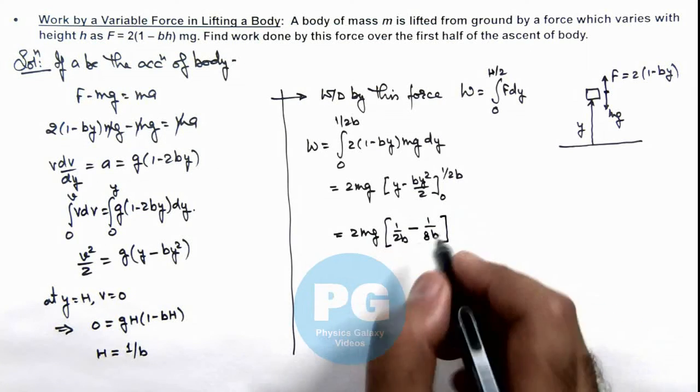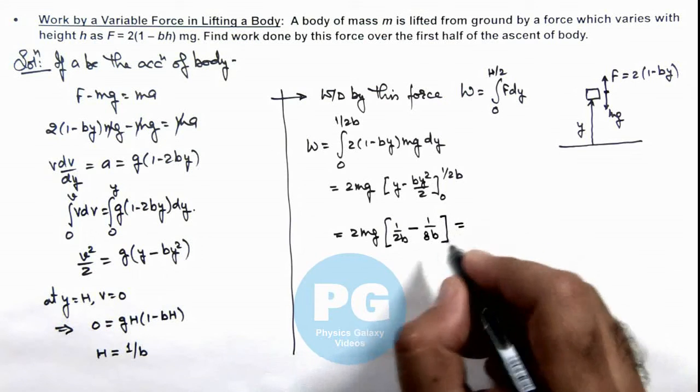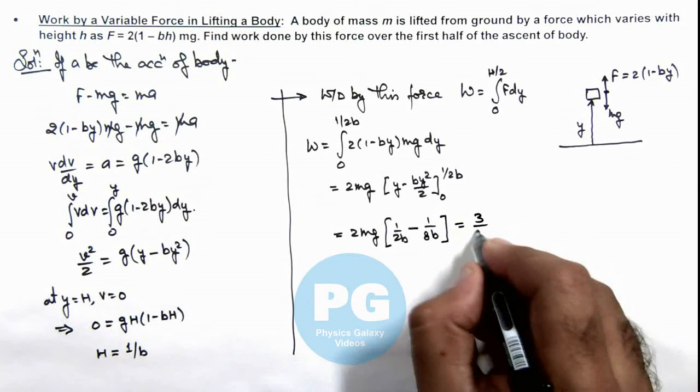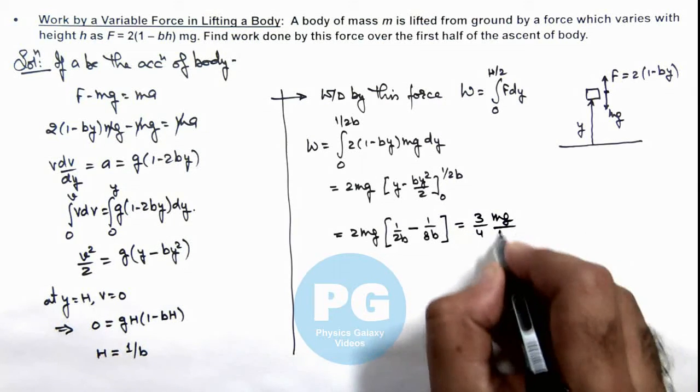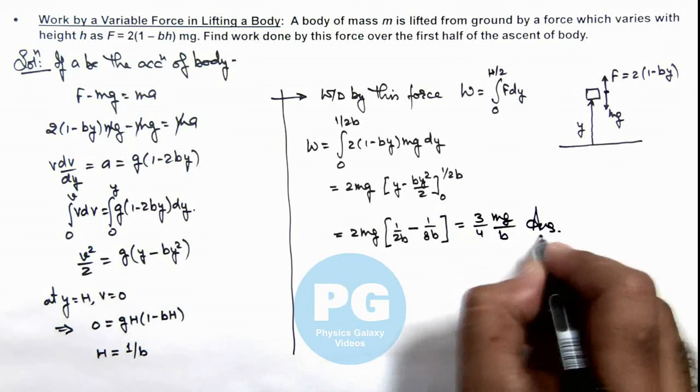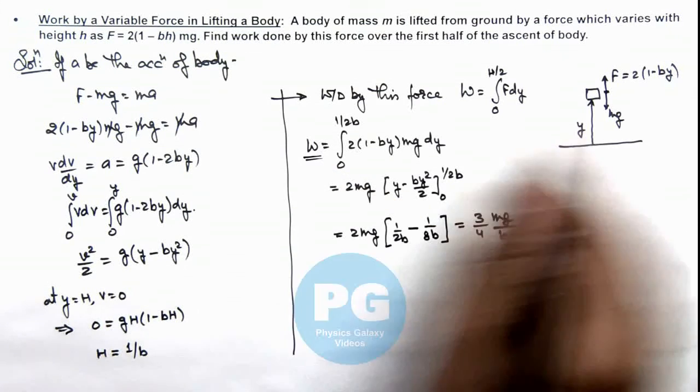On further simplifying here, we can see this is giving us 3mg/(4b) that will be the final result of this problem, the work done over first half of the ascent of body.